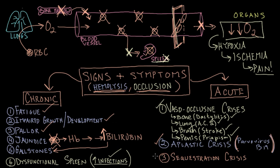The last thing to discuss here is sequestration crisis. This means that as the red blood cells are filtered through the spleen, they become trapped — sequestered — there. This can lead to hypovolemia and possibly shock, which can be fatal.